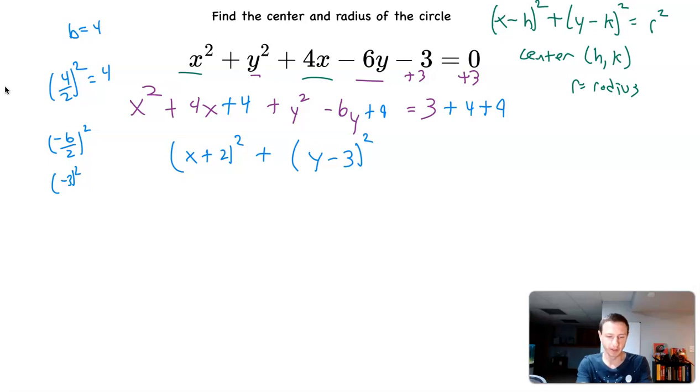This term, like right here, the 4 divided by 2, so that becomes 2 squared, and then we write it as 4. That 2 is where we get this plus 2 right here.